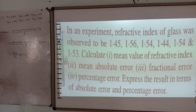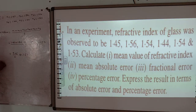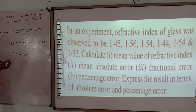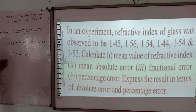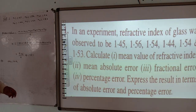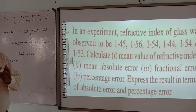Part 1 is done. Part 2 asks for the mean absolute error. To find this, we first take the mean value and then calculate n-bar minus n1, n-bar minus n2, n-bar minus n3, and so on. So we calculate delta n1 equal to n-bar minus n1, then delta n2 and delta n3.